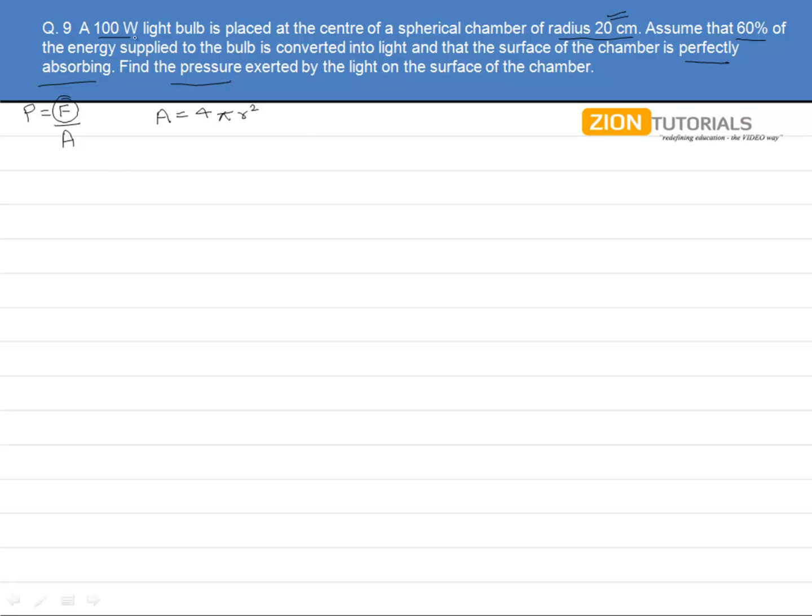Now we need to calculate this force from the power of 100 watts. We have been given the power to be 100 watts, and we know that power equals F times V.